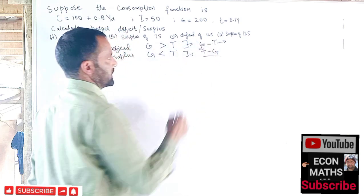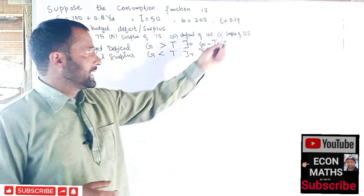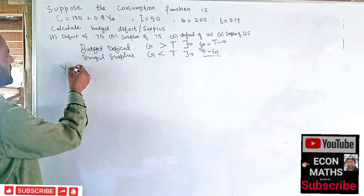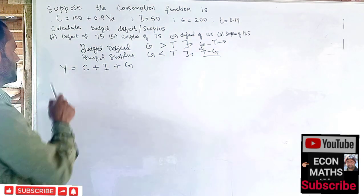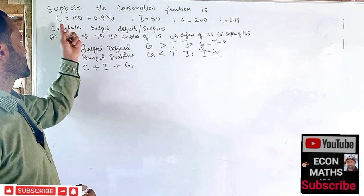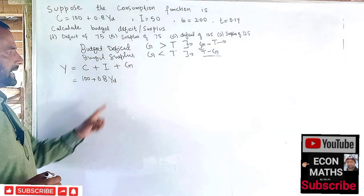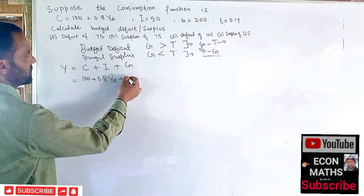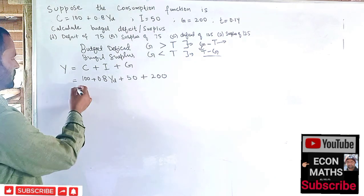We have to find T. Since T is a function of income, we must first find income Y. We write our GDP formula: Y = C + I + G. Our consumption function is C = 100 + 0.8 Y_d, investment I = 50, and government expenditure G = 200, so we write: Y = 100 + 0.8 Y_d + 50 + 200.